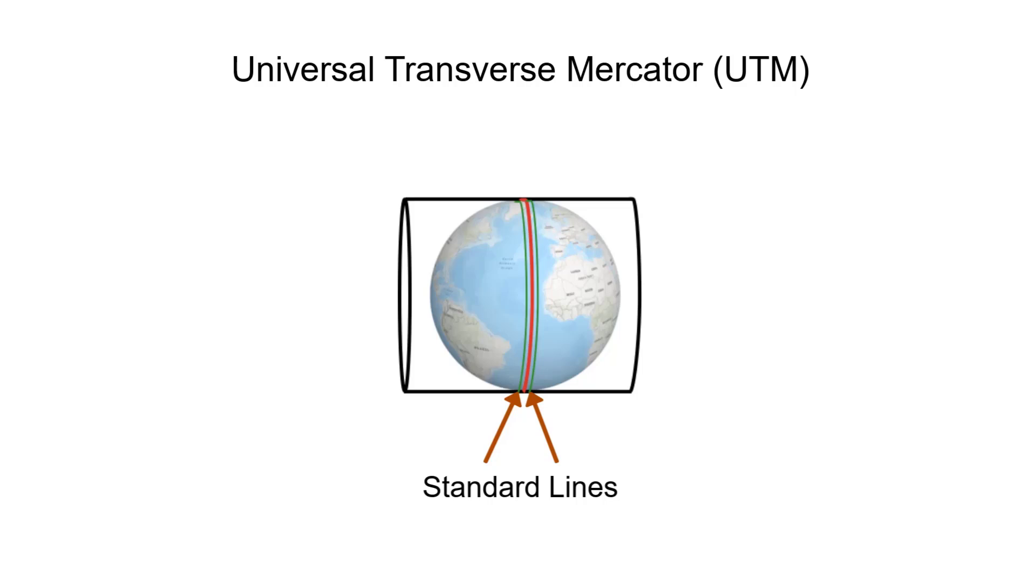The standard lines are 180km east and west of each central meridian. The scale factor of the standard lines is 1, meaning a distance of 100m would be the same on the map projection.